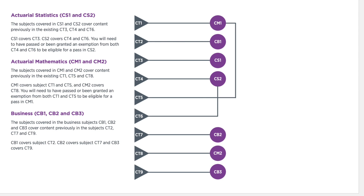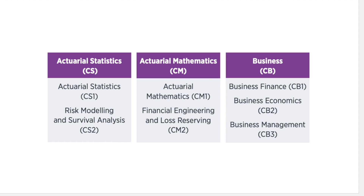Now they've changed it to create three categories: actuarial statistics, actuarial mathematics, and business. The problem is everything has moved around and it's unclear what order to do the exams in. For instance, to do CT5 you needed CT1, CT3, and CT4 first — but now with CM1, do you need to do CS2 before CM1? I really don't know what the best order is, so let me know in the comments.